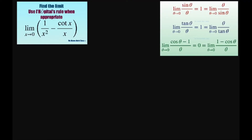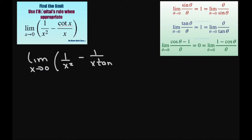The first thing we're going to do is rewrite the cotangent as a tangent. So we're going to write this as the limit as x approaches 0, and we're going to have 1 divided by x squared minus 1 divided by x times tan of x. So it's an equivalent expression.